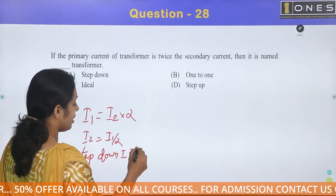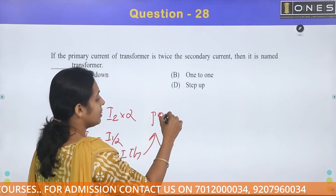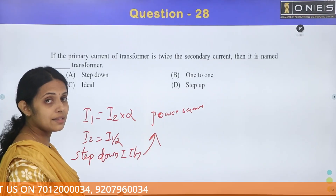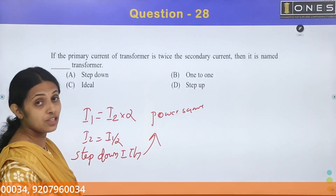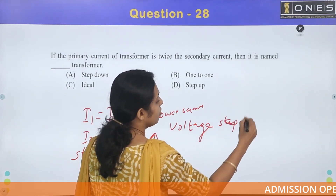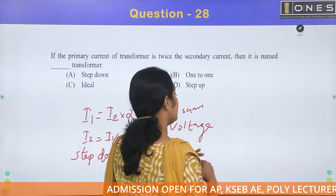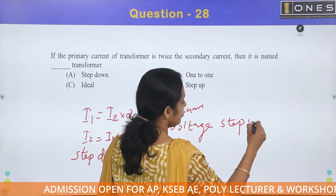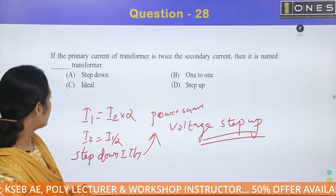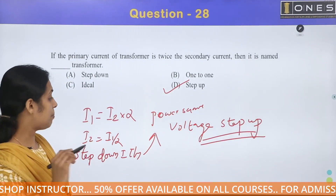Since power is the same, if current is stepped down (primary current is higher), then voltage must be stepped up. So this is a step-up transformer. Option D is the correct answer: it will be a step-up transformer.